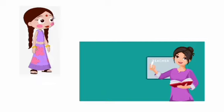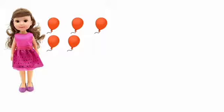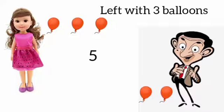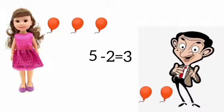Rita has five balloons. She gave away two balloons to her friend. How many balloons does she have now? Rita had five balloons, take away two balloons, left with three balloons. Five minus two is equal to three.